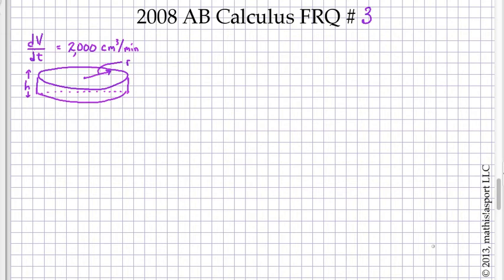In this problem we have an oil slick in the shape of a very thin cylindrical disc. The radius is expanding and the height is changing. In this case, we're going to find out that the height is growing, so it's getting thicker and spreading out more and more.